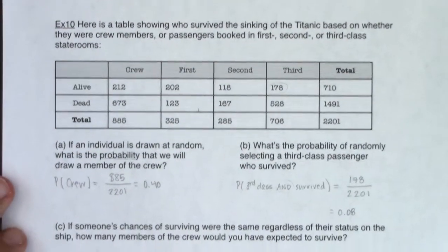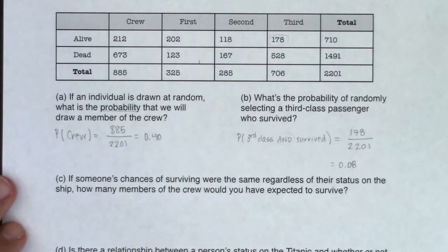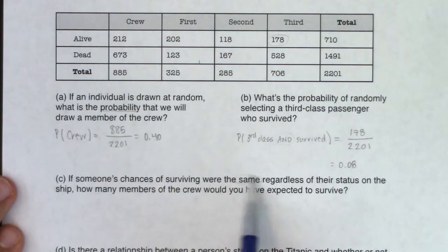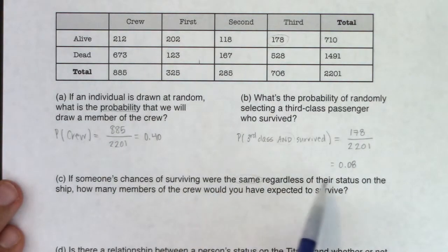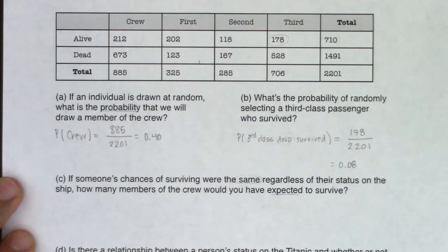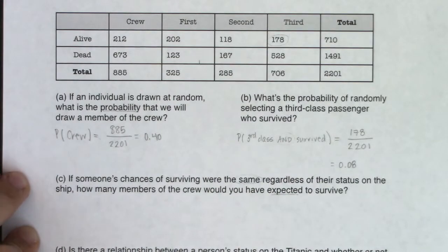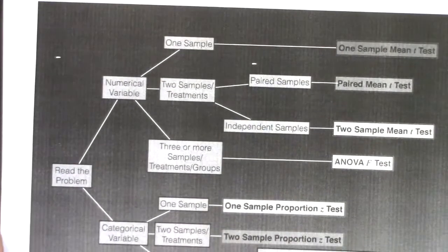Part C asks: if someone's chances of surviving were the same regardless of their status on the ship, how many crew members would you expect to survive? This is starting to go into a chi-squared type of question. Before we get there, let's figure out what the variable of this problem is and where we are on our giant flowchart.